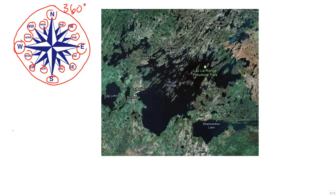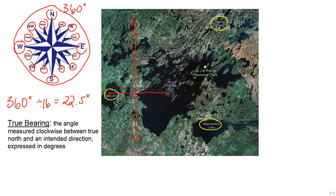If you have a compass rose that has 16 directions, you simply take 360 degrees divided by 16, and each one of these directions is going to equal 22.5 degrees. Now let's estimate the true bearing of three places in northern Saskatchewan using this compass rose.